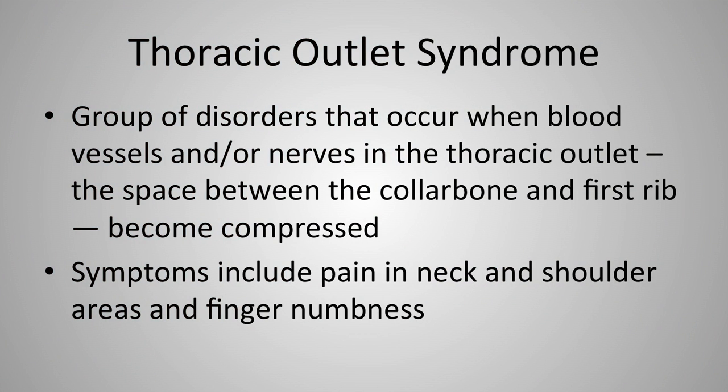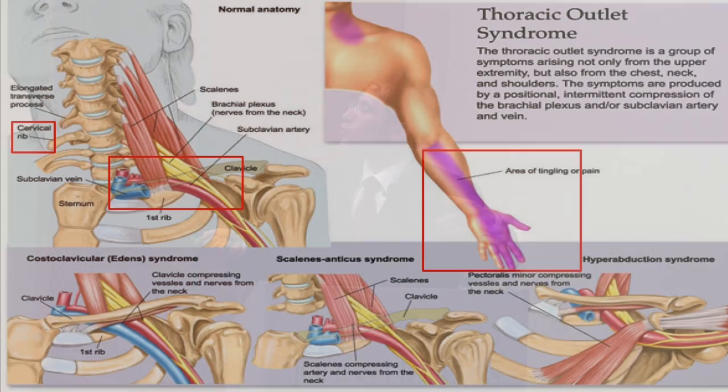Thoracic outlet syndrome refers to a group of disorders occurring when blood vessels or nerves in the thoracic outlet become compressed. Symptoms include pain in the neck and shoulder areas and finger numbness. In about 1 in 200 to 1 in 500 people there's a cervical rib — an incompletely formed rib above the first rib — that can contribute to compression of the brachial plexus, the series of nerves coming out of the neck. The subclavian artery can also compress these nerves. Moving the head in a certain direction can precipitate these symptoms.